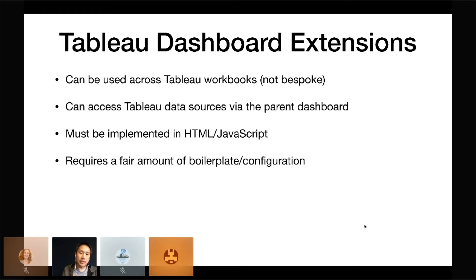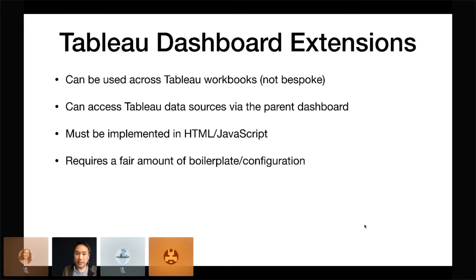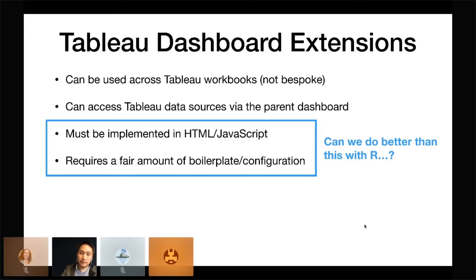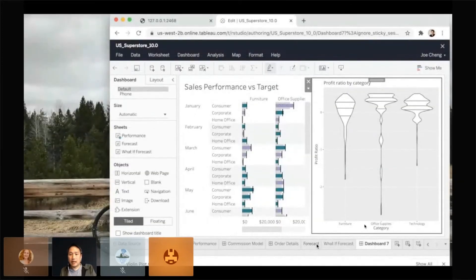These Tableau dashboard extensions are designed not for bespoke visualizations for an individual workbook, but for creating a visualization type that can be used across multiple Tableau workbooks, which is really nice. A handy JavaScript developer can create a visualization and then any number of Tableau users who know nothing about JavaScript can use them. It's also nice that you can access Tableau data sources through the JavaScript side without bringing your own data connection. However, this must be implemented in HTML and JavaScript, and requires a fair amount of boilerplate and configuration — and that triggered my instinct to do better using R. That's where shiny-tableau comes in. What you're looking at is a ggplot violin plot shown in a Tableau dashboard, which is not something included with Tableau.